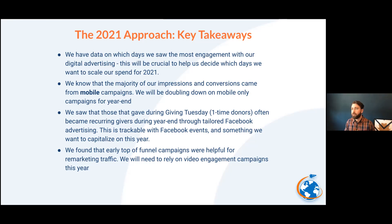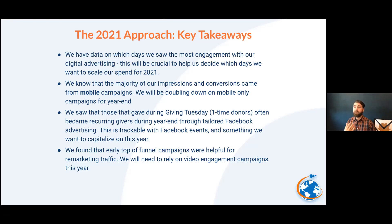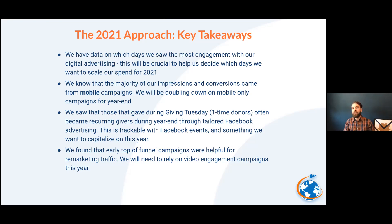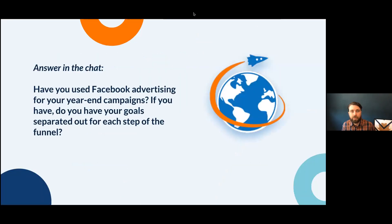We also found that early top-of-funnel campaigns were helpful for remarketing traffic. We ran a tiered advertising style: we started with branded advertising focusing on engagement and video views, then remarketed people who watched a certain percentage of the video for Giving Tuesday and year-end, asking them to donate. Starting with a general branded ad — not even making a hard ask — and then moving them toward a donation later on worked very well.